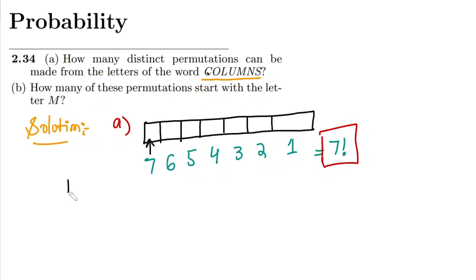Similarly, in solving part B, the question is: how many of these permutations start with the letter M? So we have here again these seven letters, and we have to find how many words can be made of these letters in such a way that the first part has been captured by the letter M.